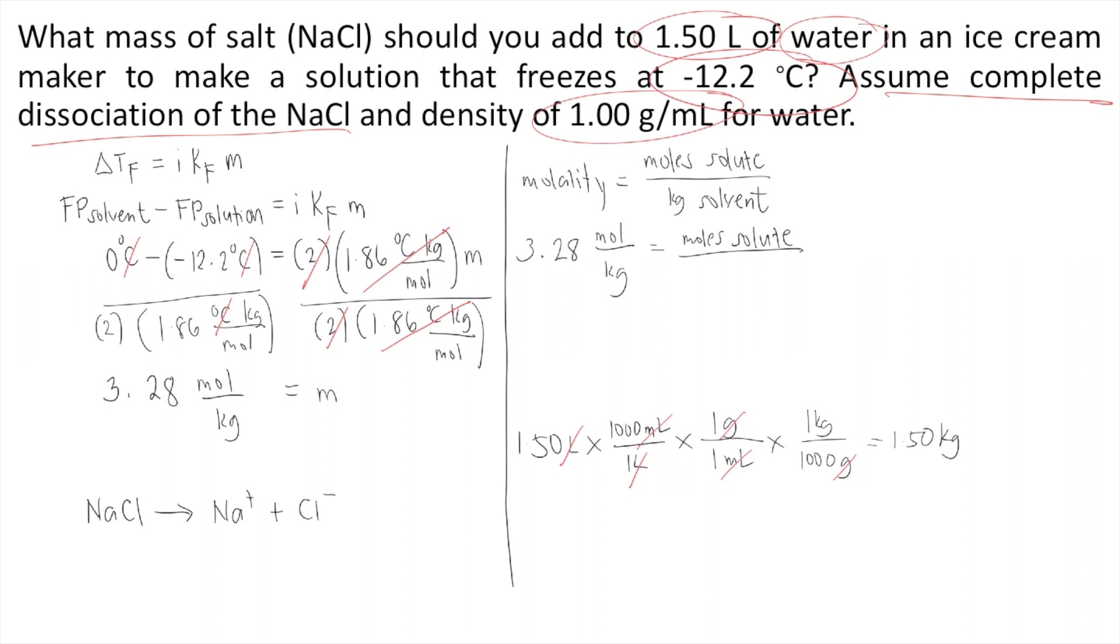So this is your kilogram of solvent. So you put that into your solution. So to solve for the moles of solute, that is 3.28 moles per kilogram times 1.50 kilograms. So the kilograms would cancel. And if you solve that in your calculator, 3.28 times 1.50, that's equal to 4.92 moles of the solute. So now that we know the moles of solute, we can now solve for the mass of the solute. Remember, our solute is NaCl.